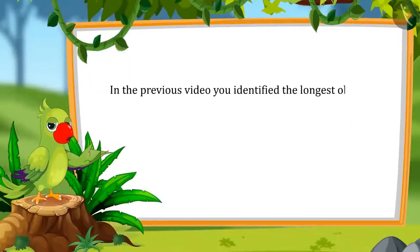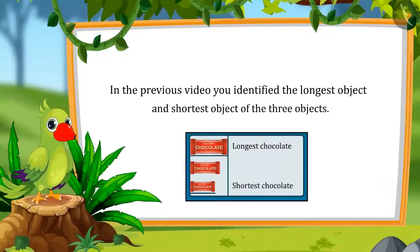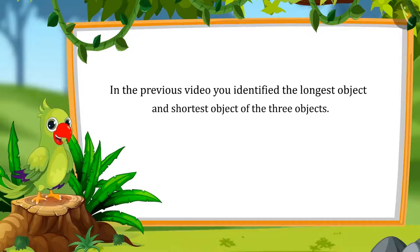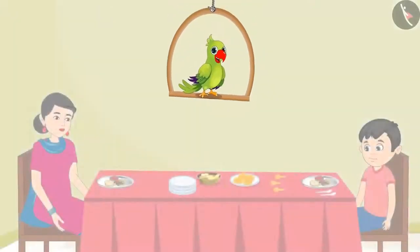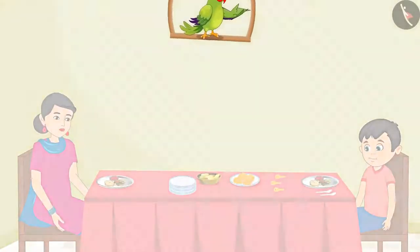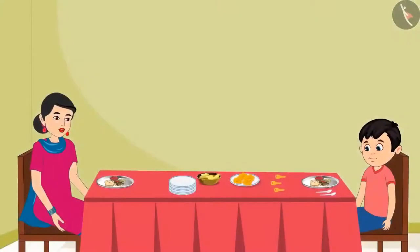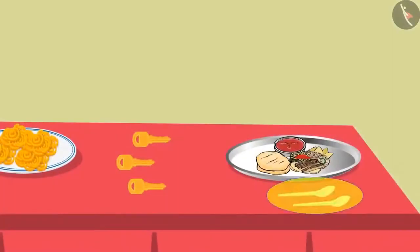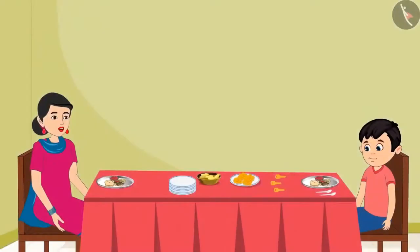So kids, in the previous video, you identified the longest object and the shortest object out of three objects. In this video, we will learn about some common mistakes in identifying long and short objects. Chotu and his mother have sat down to have their food. Mummy asks for a spoon. Chotu asks: Which spoon, mummy? The short one or the long one? Chotu, both these spoons are of the same length. Neither of them is short or long.